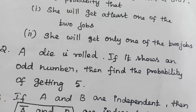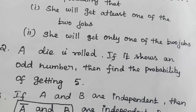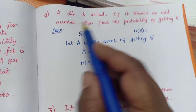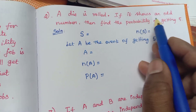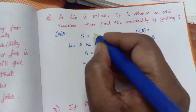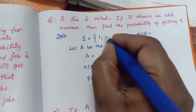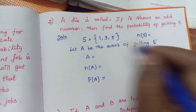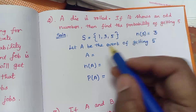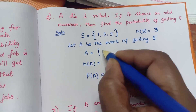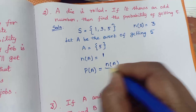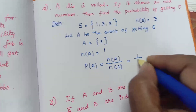Second sum: a die is rolled; if it shows an odd number, find the probability of getting 5. Since we fix the condition on the sample space to odd numbers only — that is 1, 3, 5 — N of S is equal to 3. Let A be the event of getting 5, so A equals {5} and N of A equals 1. Therefore P of A equals N of A divided by N of S, which is 1 divided by 3.